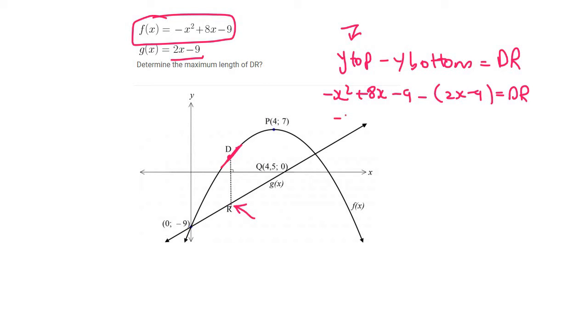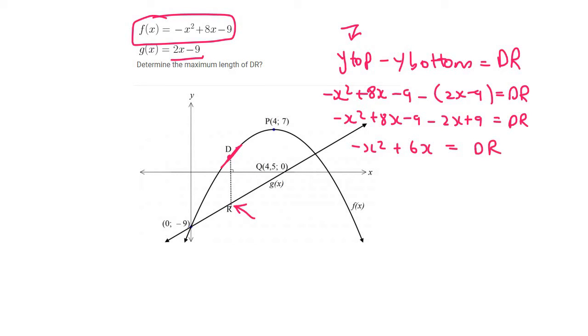All that we do now is simplify: minus 2x plus 9, and that's the length of DR. We then put all like terms together, and that gives us that expression. The 9s cancel.